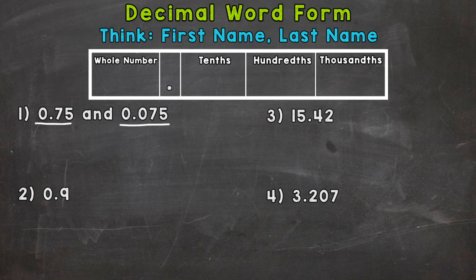So let's use the place value chart at the top of your screen in order to break these numbers down and see what the word forms are going to be.